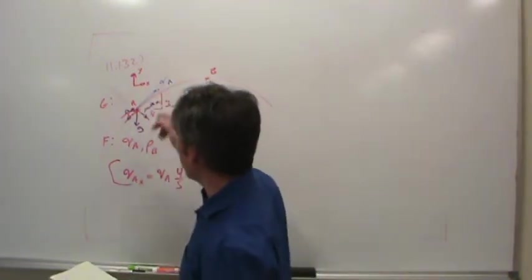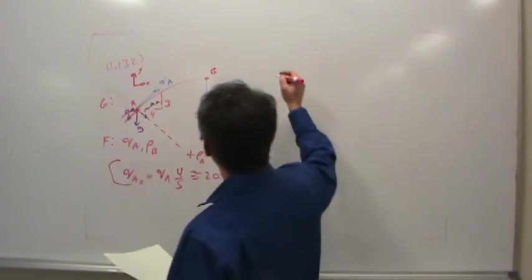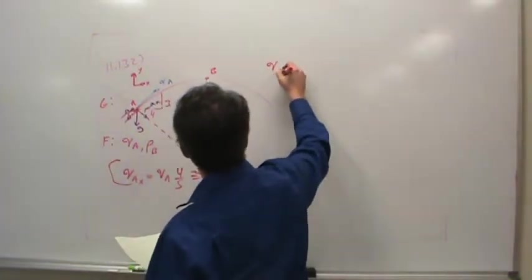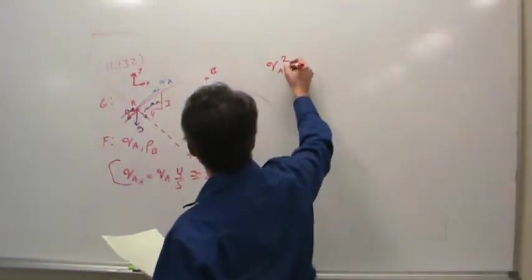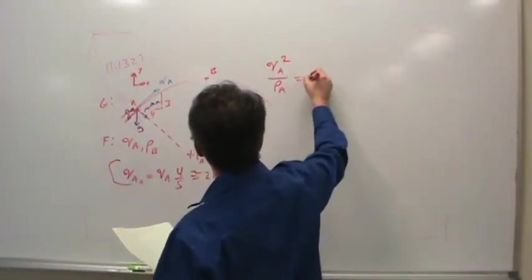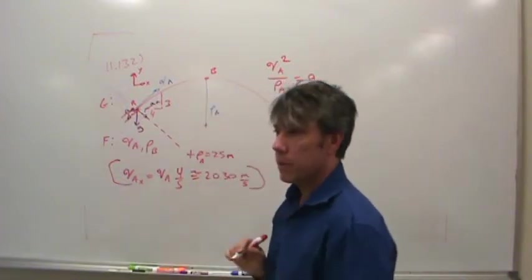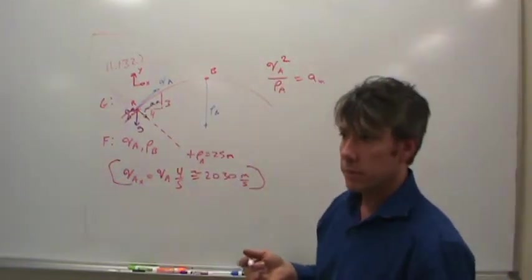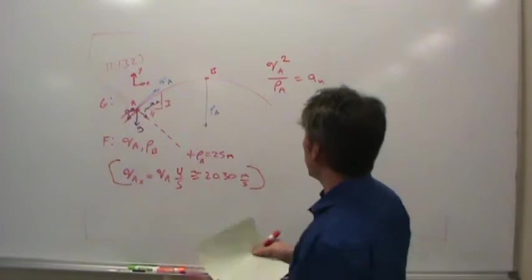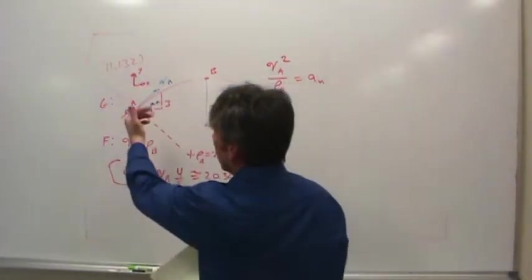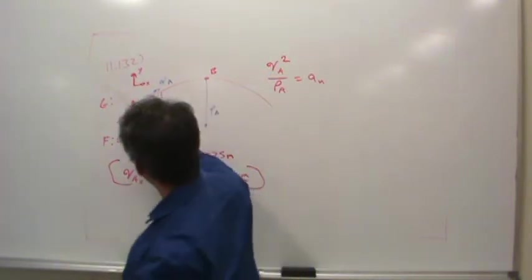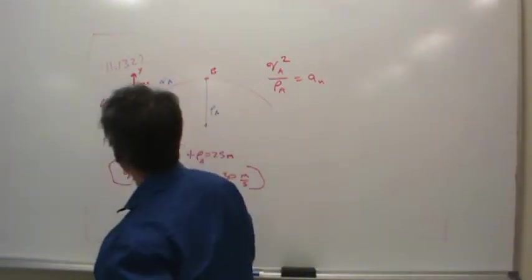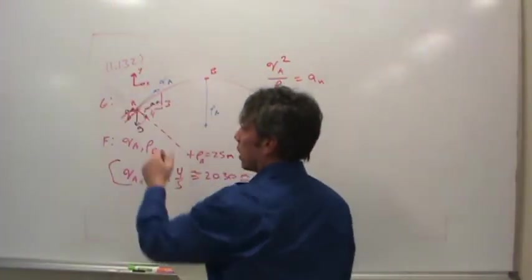How are we going to get the velocity at A? Well, here's the key. You know that the velocity at A is just the tangential velocity, right? And so if you take the square of that tangential velocity divided by the radius at A, you should get the normal acceleration. Right? Because that's just how the tangential velocity relates to the normal acceleration. But you also know that the normal acceleration is just a component of g, right?